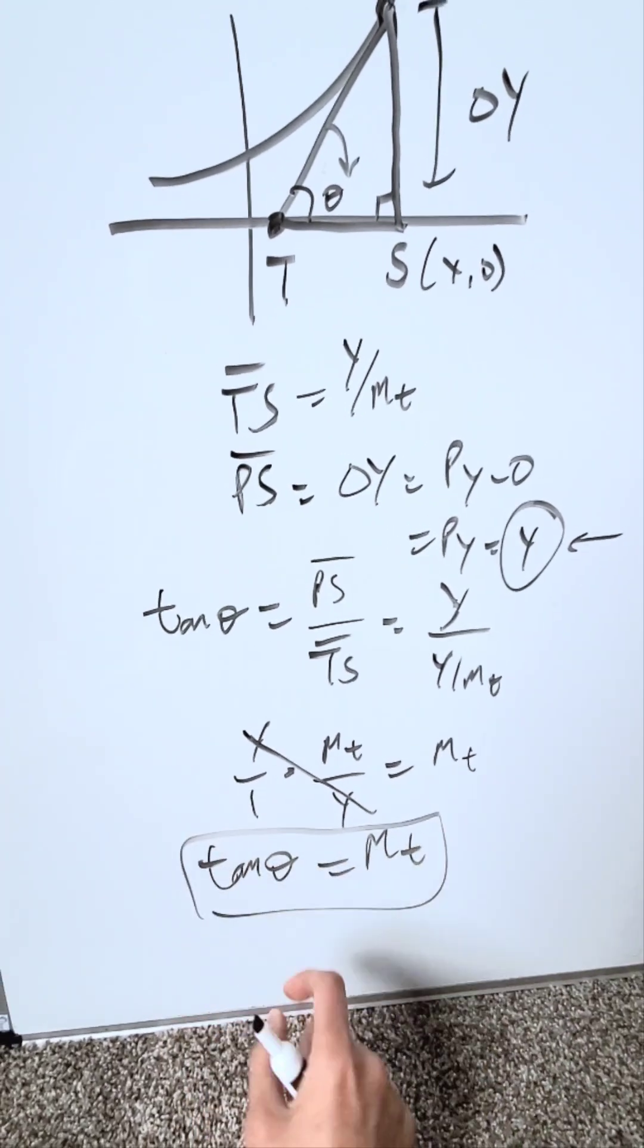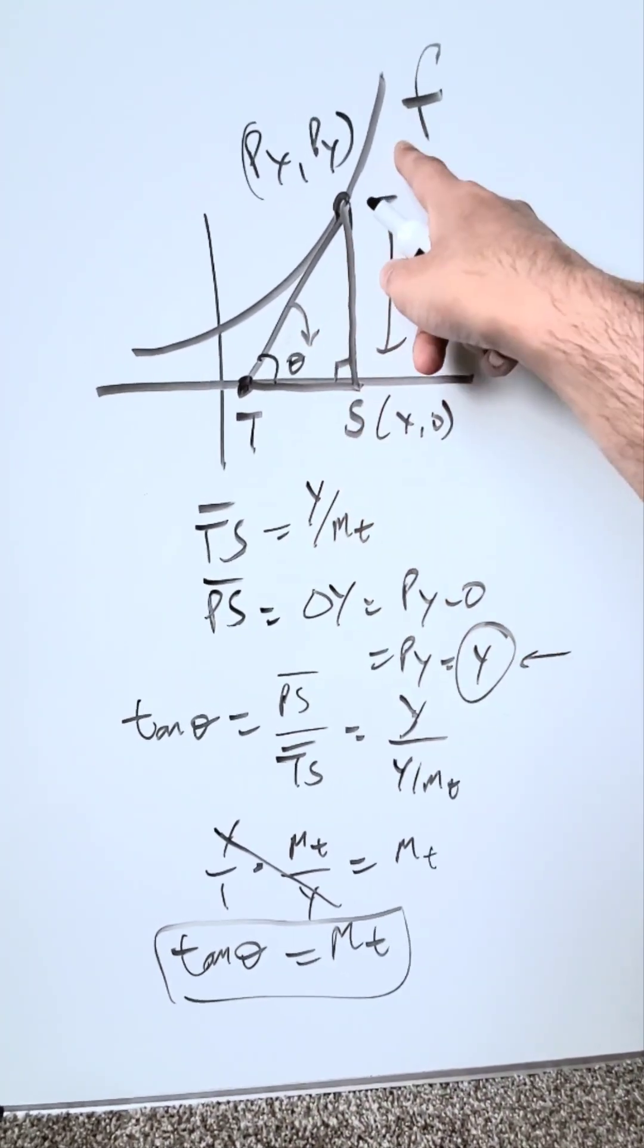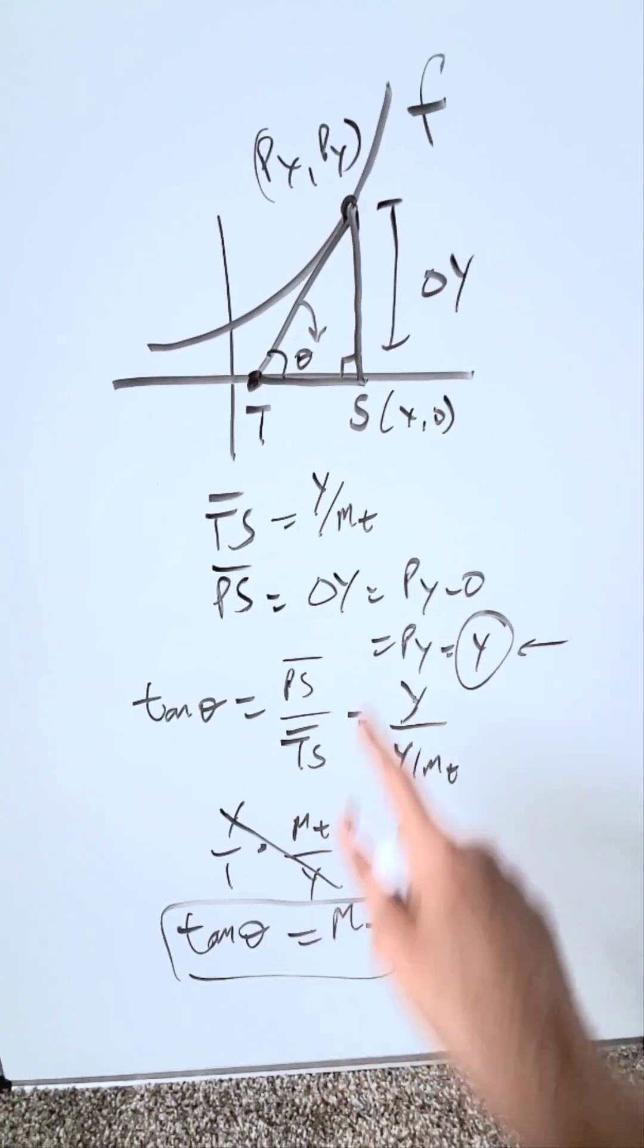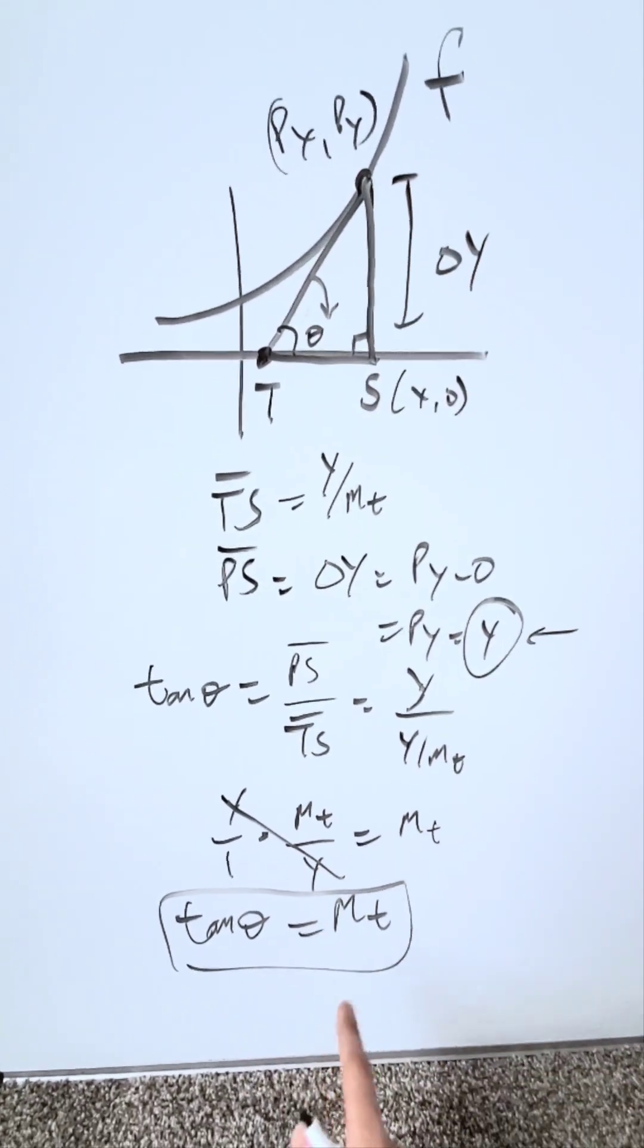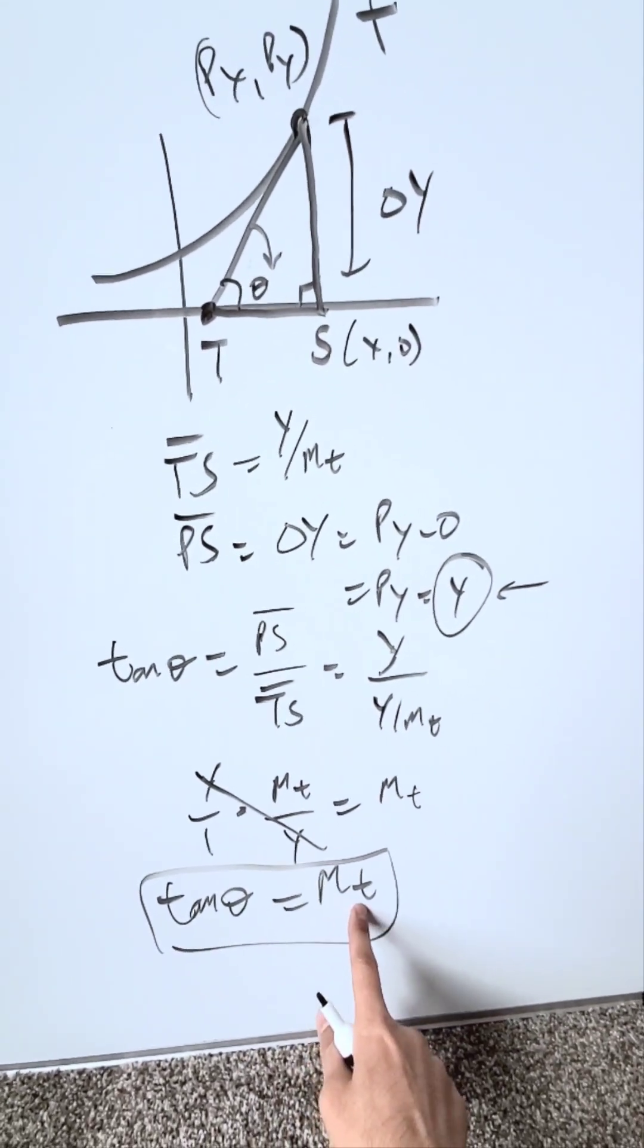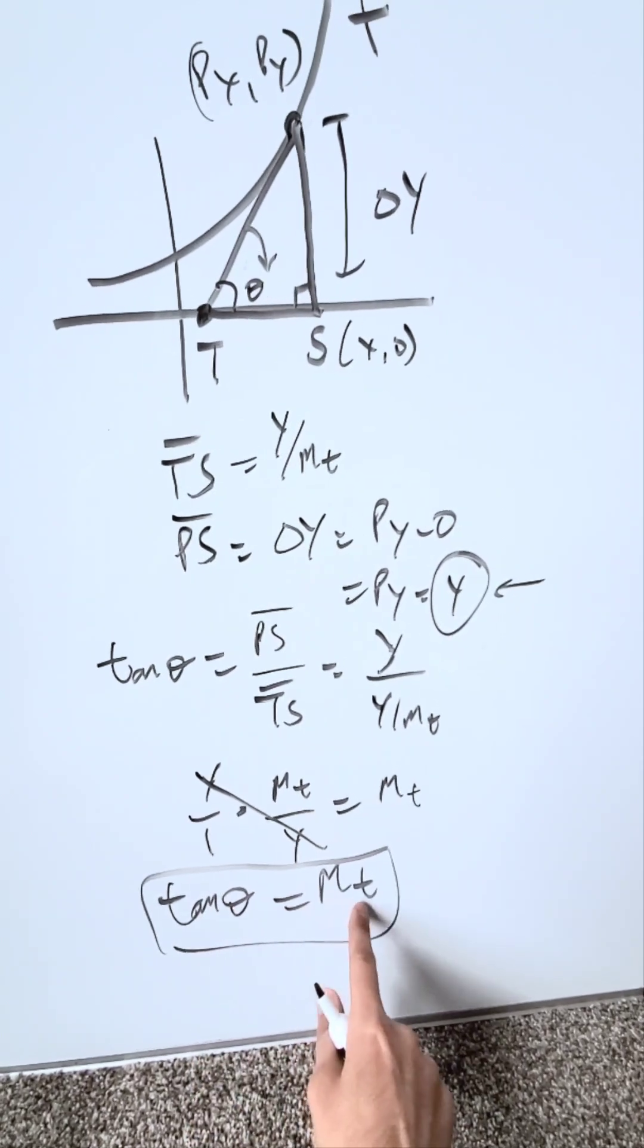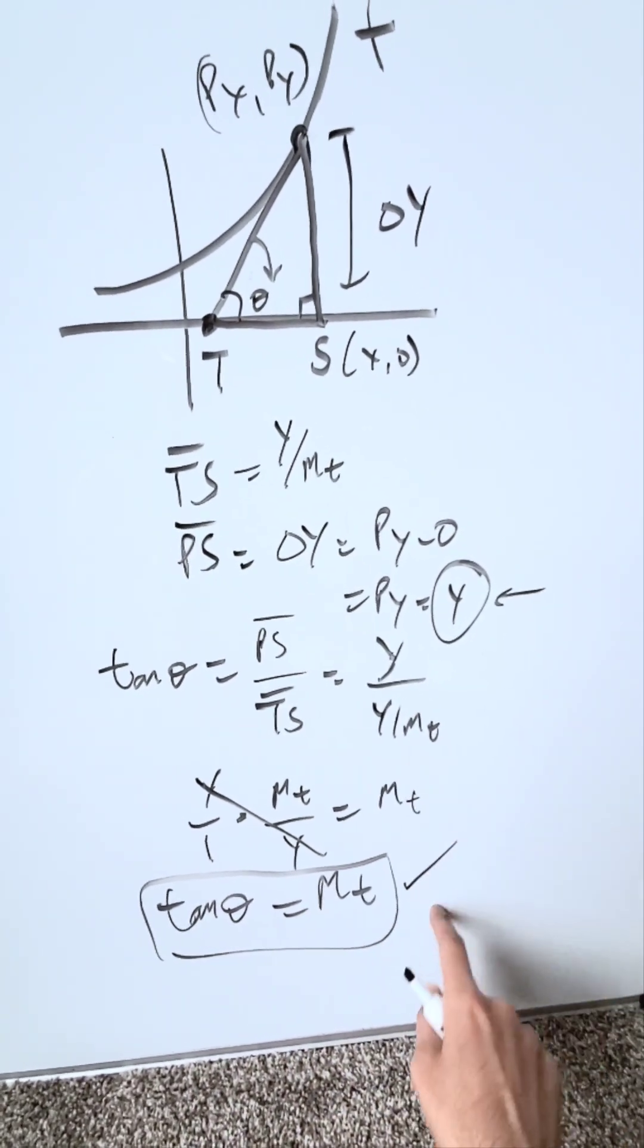What this means is, the angle of inclination of any tangent line on a curved function at a particular point, so long as a derivative can be determined there, is always equal to the slope of your tangent line. Tan theta equals the slope of your tangent line, and this formula here is good.